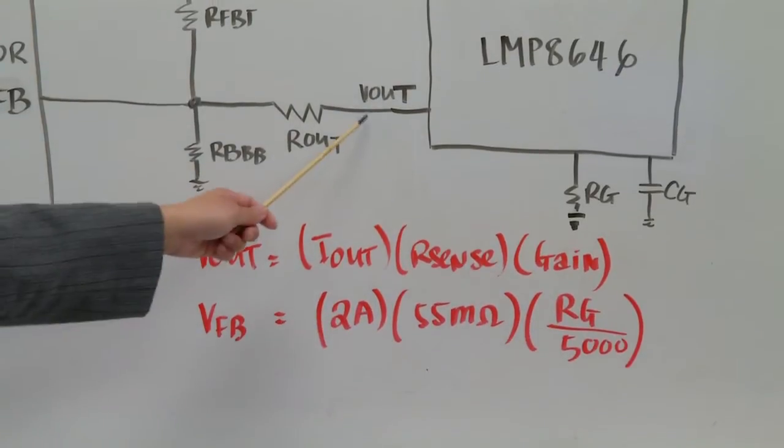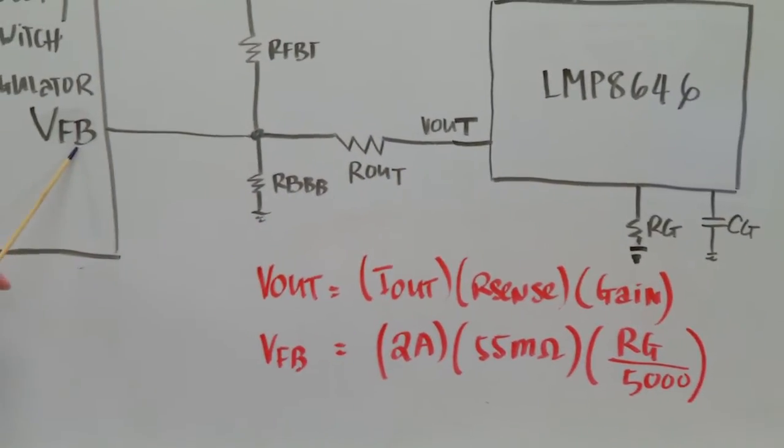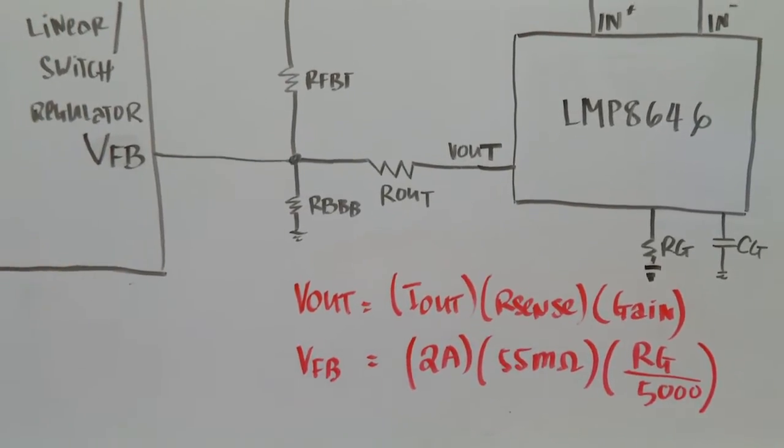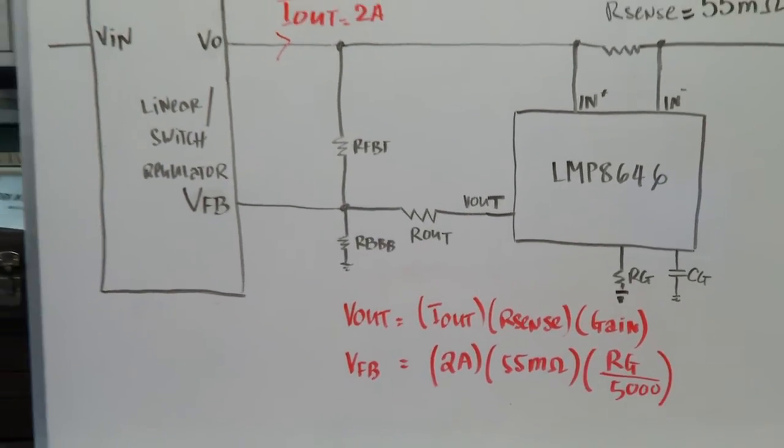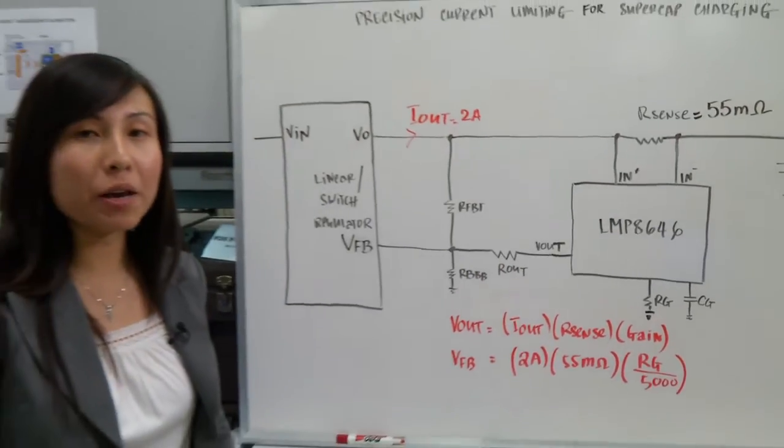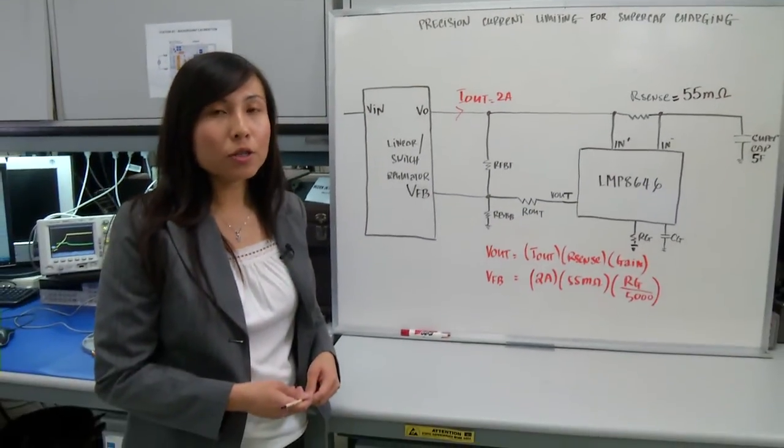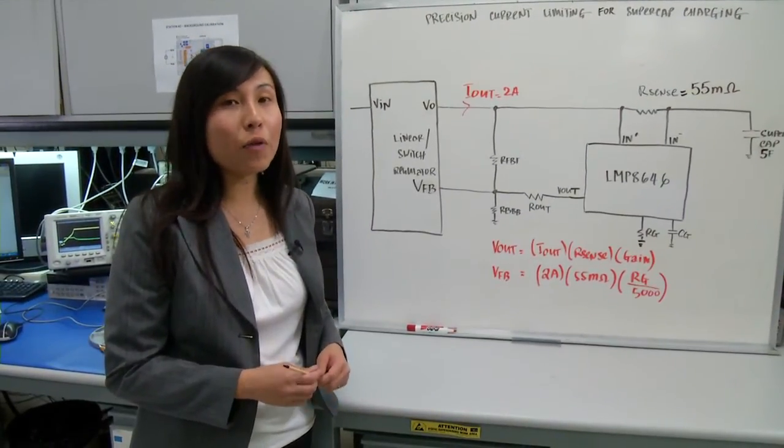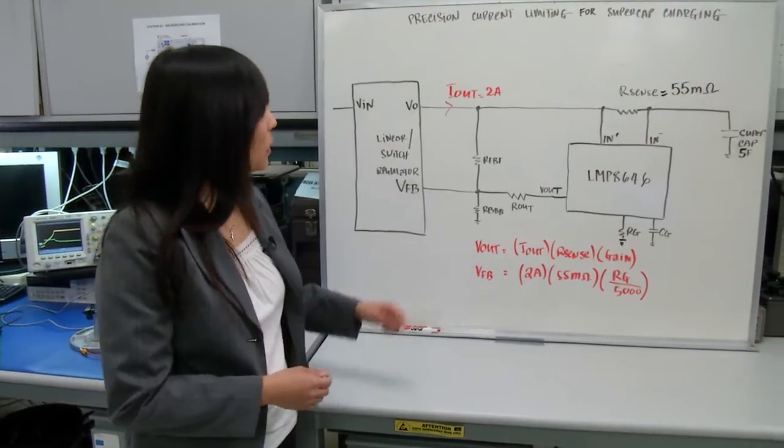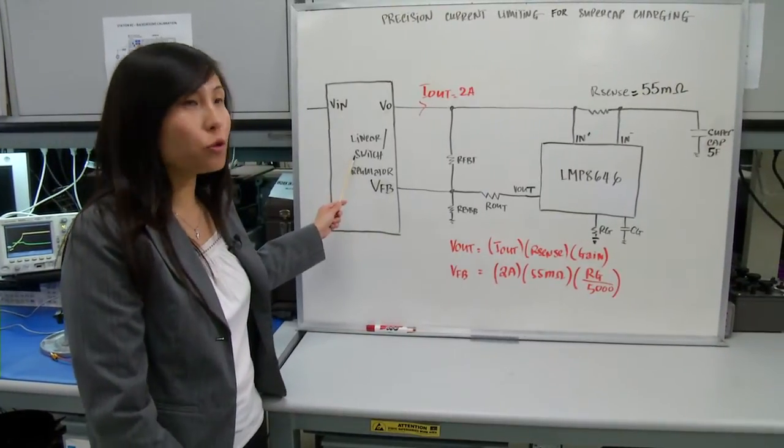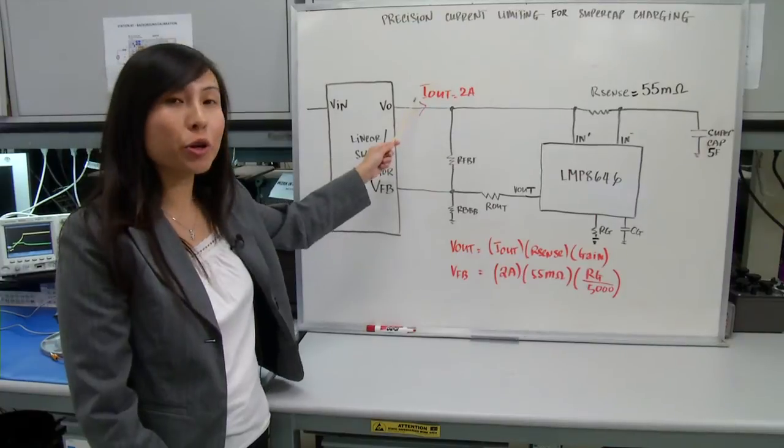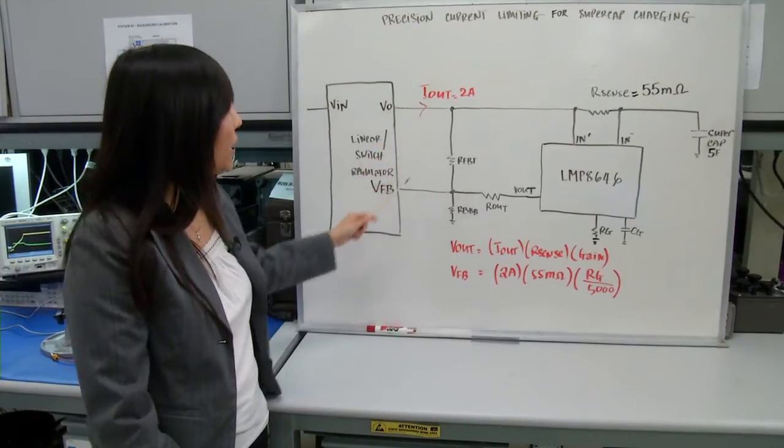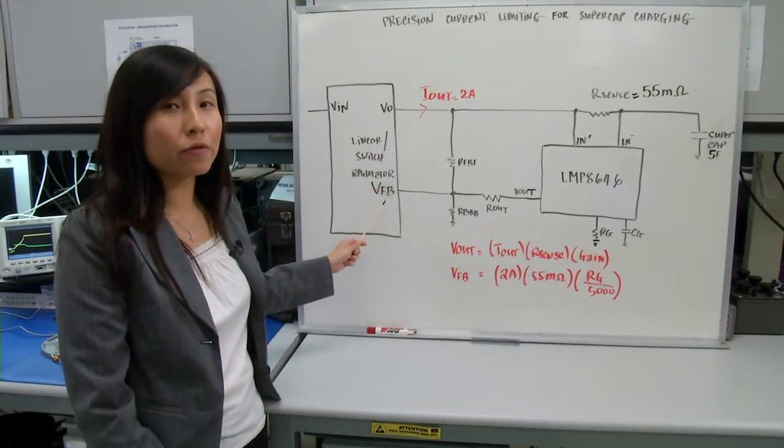Now the Vout will be connected to the feedback pin of your regulator. And let's say assuming you are using an LM3102 regulator, that feedback pin will be 0.8 volts. So at any time that the Vout exceeds this 0.8 volts, the LM3102 will decrease its output current in order to maintain a feedback pin of 0.8 volts always.